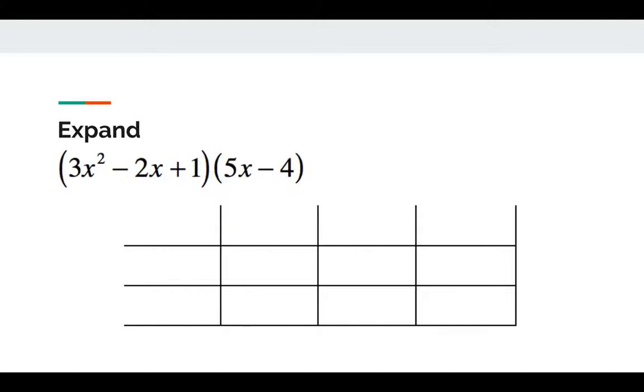The outside is to write down the terms involved for the question. The terms for the first polynomial 3x² - 2x + 1 we must put here. And for another polynomial 5x - 4 we must put vertically here.